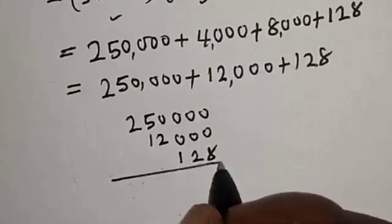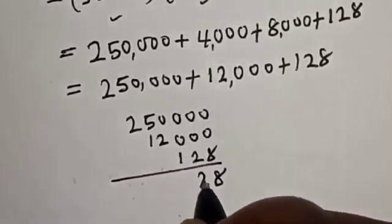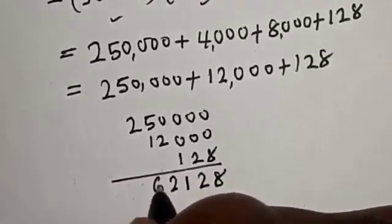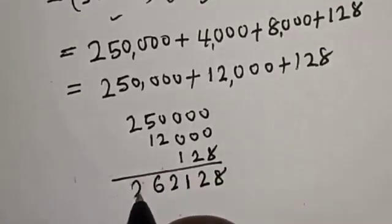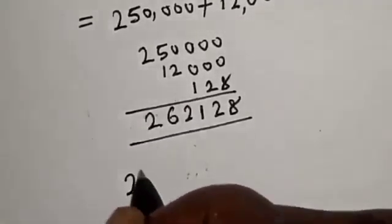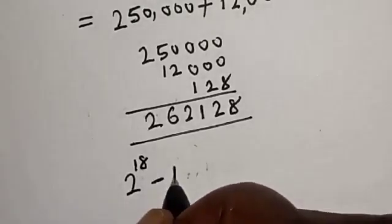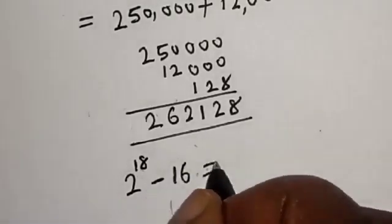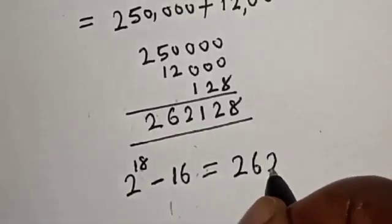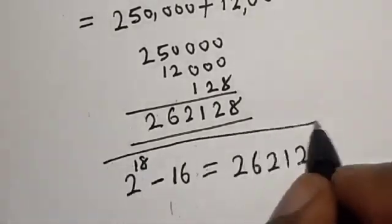Adding everything together, we get 262,128. Therefore, 2 raised to power 18 minus 16 is equal to 262,128. That is our final answer.